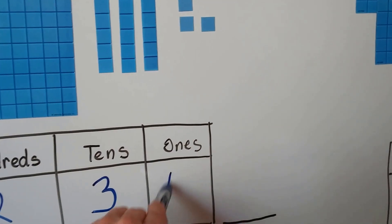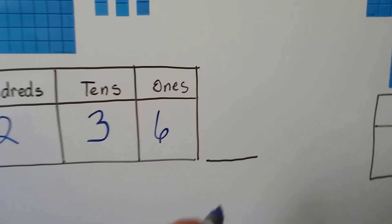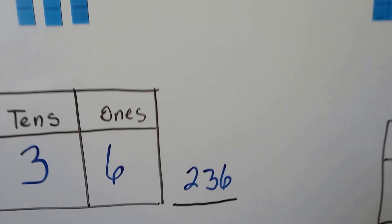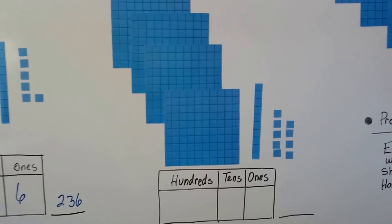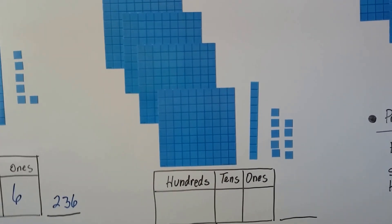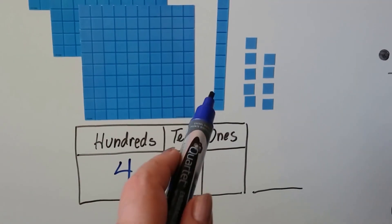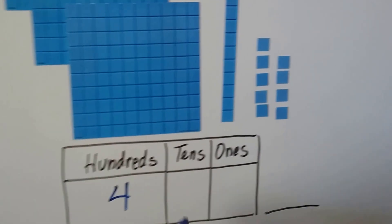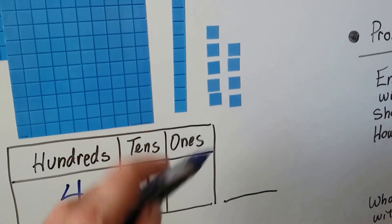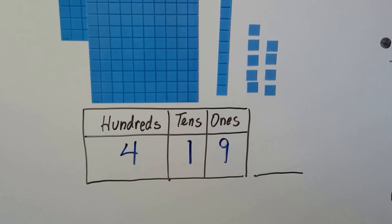And we can write this number: two hundred and thirty-six. Let's take a look at this one. How many hundreds do we have? One hundred, two hundred, three hundred, four hundred. There are four hundreds here. How many tens? Just one. How many ones? Five, six, seven, eight, nine ones.